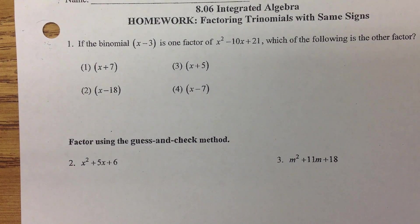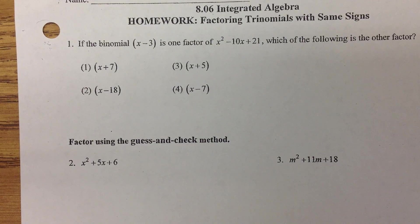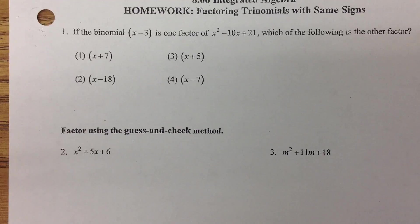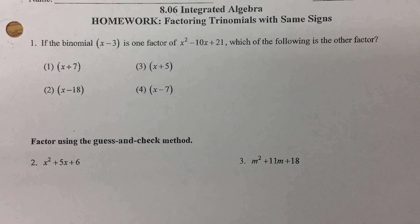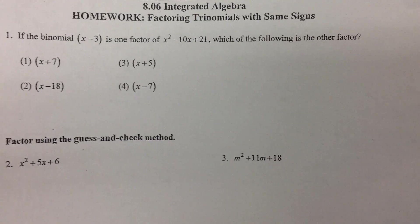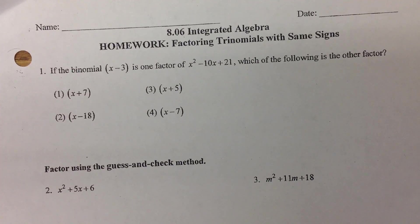Hello, and welcome to homework 8.06. This is all about factoring trinomials. Number one: if the binomial x minus 3 is one factor of x squared minus 10x plus 21, which of the following is the other factor?